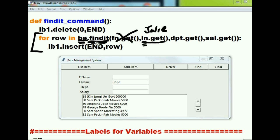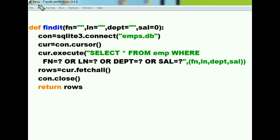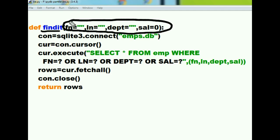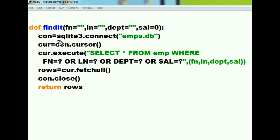Let's go to the be.py file's find_it function to see what it does with 'Jolie' and what it returns back to the find_it_command function. Here in be.py, the find_it function catches 'Jolie' inside the ln variable; the other variables just have blanks and are ignored.